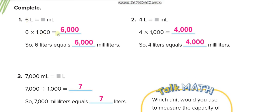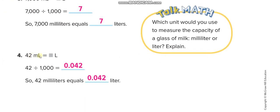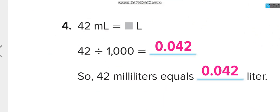Practice conversions: 6 liters = 6,000 milliliters; 4 liters = 4,000 milliliters; 7,000 milliliters = 7 liters. For 42 milliliters to liters, divide by 1,000: the decimal is at the end, move it three places left. Moving once gives 4.2, moving again requires adding a zero giving 0.42, moving a third time gives 0.042 liters.